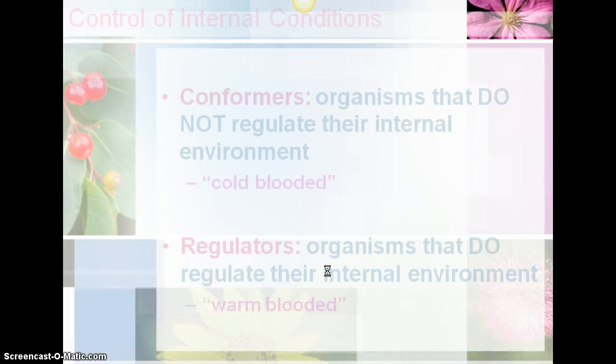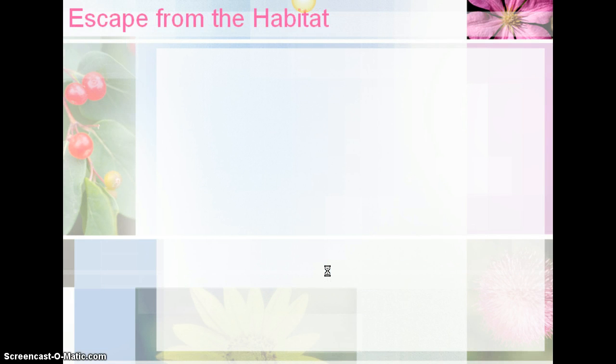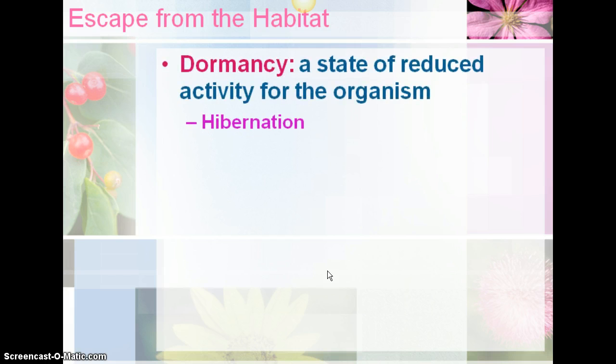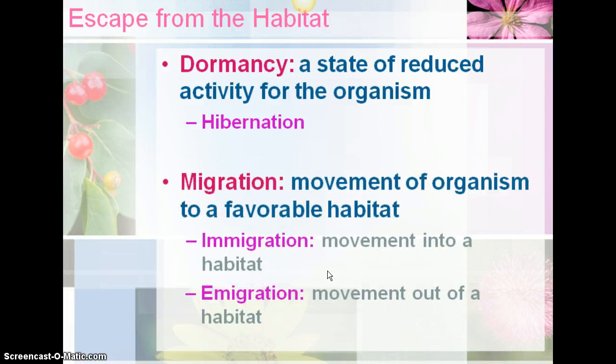Some things organisms can do to acclimate is escape from the habitat. Dormancy is a state of reduced activity for the organism, like hibernation for bears. Migration is movement of an organism to a favorable habitat — for example, birds that fly south for the winter. Immigration is movement into a habitat, and emigration is movement out of a habitat.